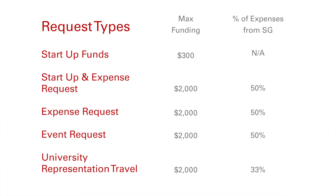More detailed descriptions of each request type can be found in the appropriations packet. Two of these request types, Startup Funding and Expense Request and Event Funding, are new for this cycle. The Startup Funding and Expense Request is for new organizations — those that registered with student involvement in Fall 2016 or Spring 2017 — wanting to apply for an amount greater than the maximum $300 of startup funds. The Event Request is for organizations who would like funding for a single event.